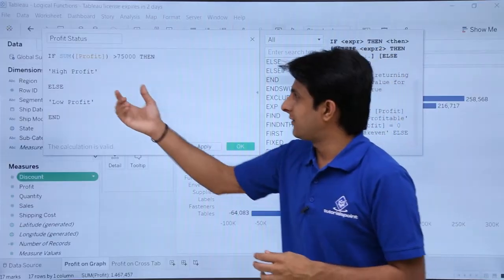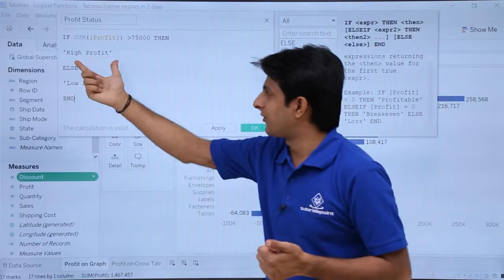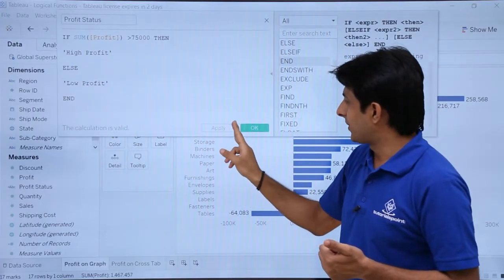So that is the IF condition itself. So if the profit is greater than 75,000, you should get this high profit, otherwise low profit. Click on apply, click on OK.